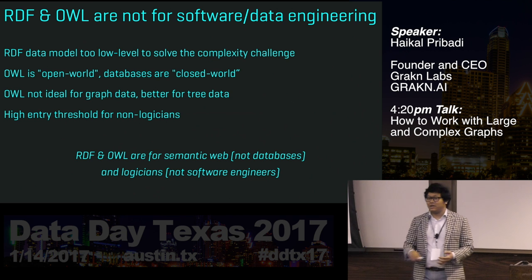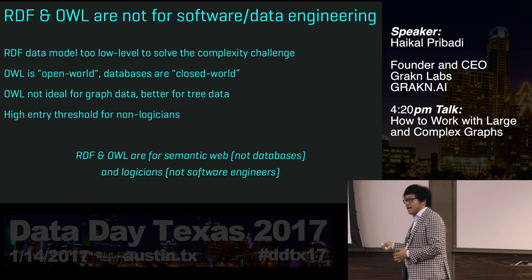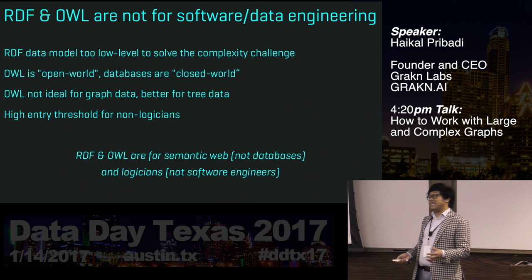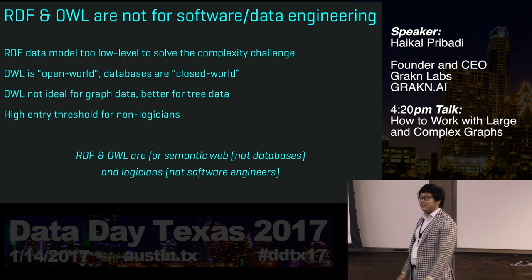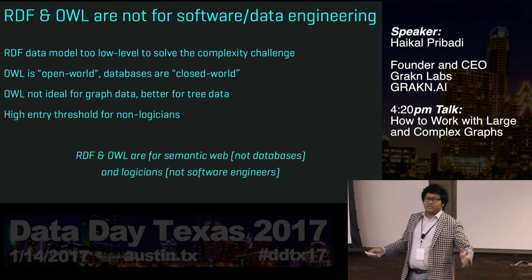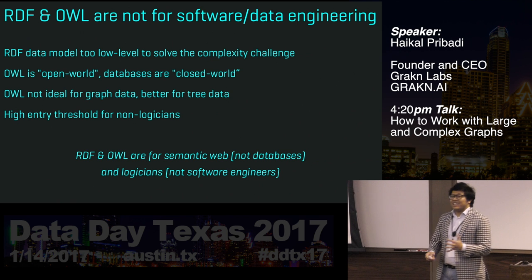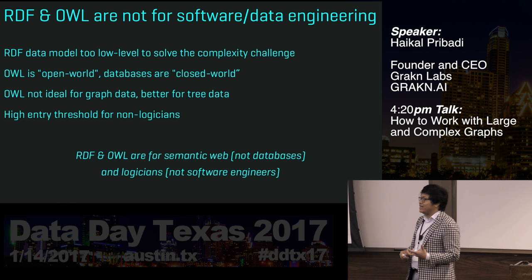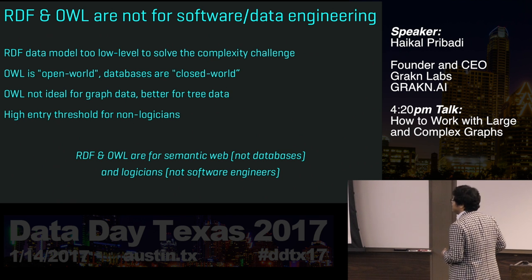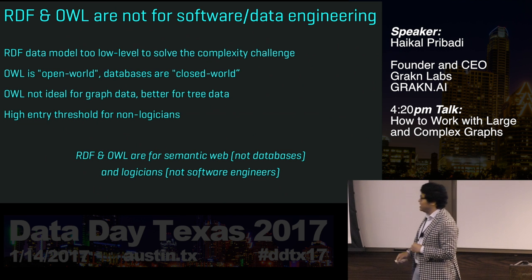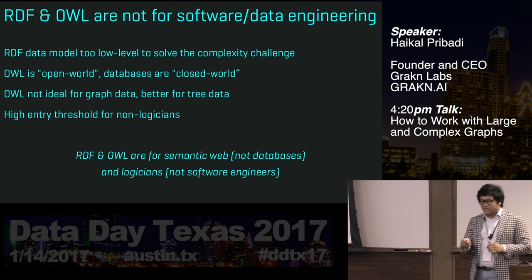We did consider RDF and OWL. But RDF's data model — subject, predicate, object — is too low level to solve the complexity challenge we want to solve. And of course OWL uses open world semantics, while a database needs closed world semantics. Also, RDF is suitable for tree data, not graph data. If you force it to work for graphs, it's quite painful. And if you're not a logician, it's really hard to adopt. Our conclusion: RDF and OWL are for the semantic web, not databases — they're for logicians, not software engineers.